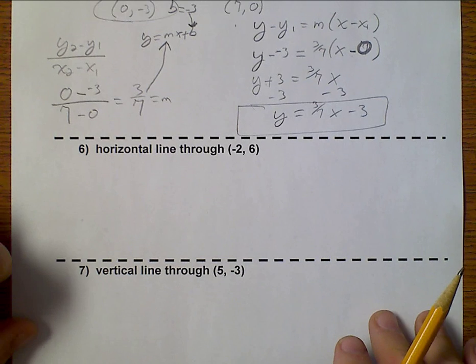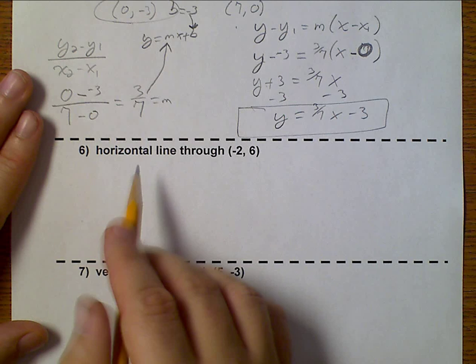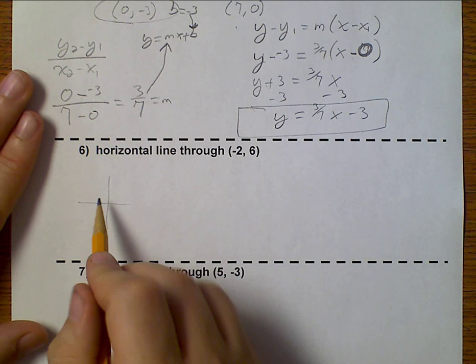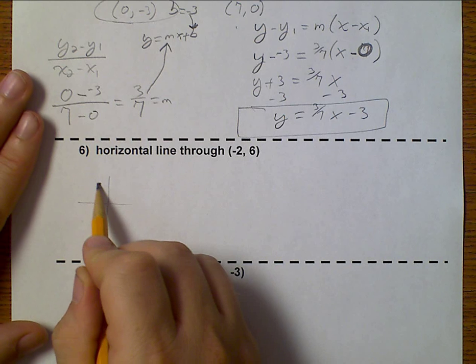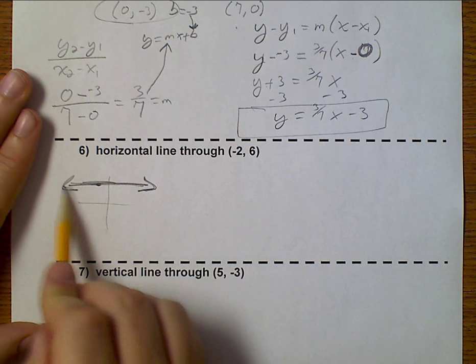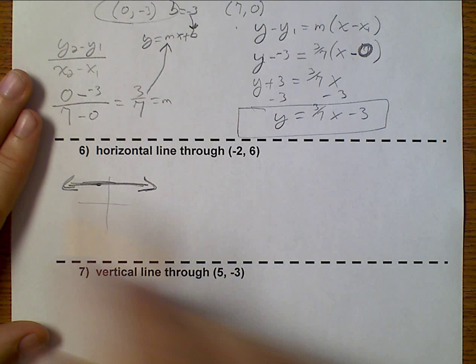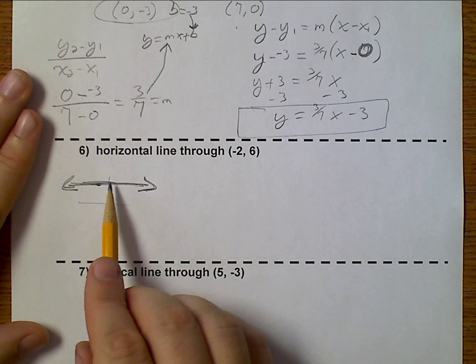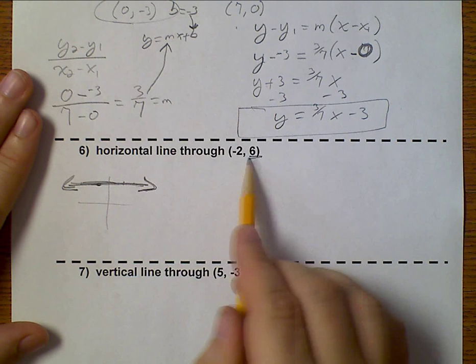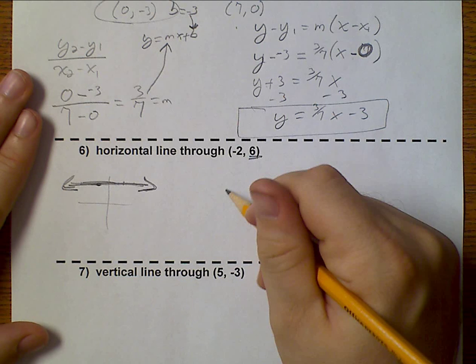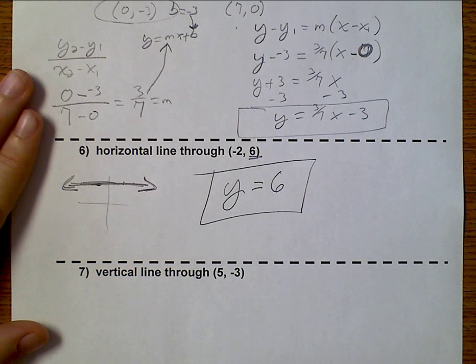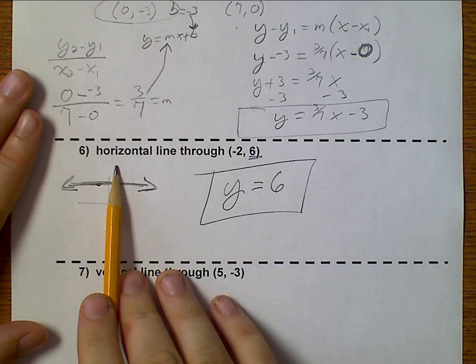Let's talk about number 6. This is a horizontal line. It goes through (-2, 6). And so it's a horizontal line, which means that it doesn't matter what points I put on here. My y-value will always be 6. y equals 6. So if you've got a horizontal line, all you need is the y-value.